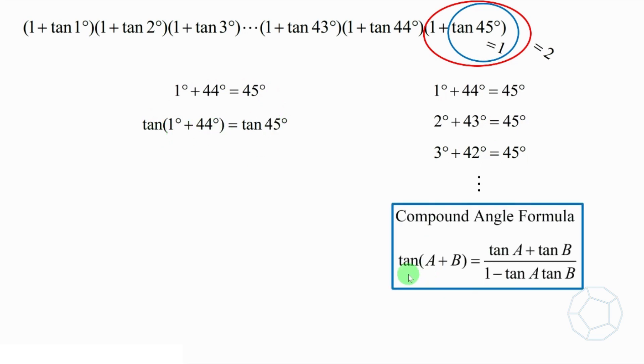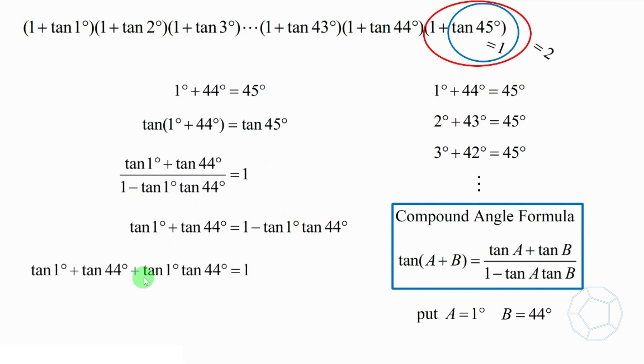The left-hand side is in the form tangent a plus b. By compound angle formula, it is equal to tangent a plus tangent b over 1 minus tangent a tangent b. So we put a equals to 1 degrees and b equals to 44 degrees to get this. We can see a sum in the numerator and a product in the denominator. Multiply the denominator to the other side, then we'll have a simpler equation. Let's put all the tangent terms to the left to get this.